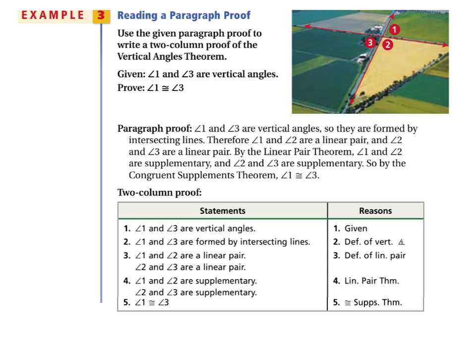Since angle one and angle two are supplementary, and angle two and angle three are supplementary, we know that angle one and angle three are congruent — because of the congruent supplements theorem, which we learned in section 2.6. Remember, once we have a theorem we have to use it. In 2.6 you learned the congruent complement theorem, the right angle congruent theorem, the congruent supplements theorem, and the linear pair theorem.